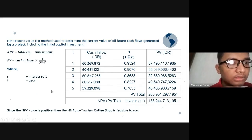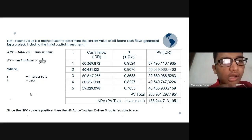PV equals cash inflow times one over one plus r to the power t, where r is interest rate and t is year. Based on the data, we get the calculation on the table. PV total equals 260,951,297.